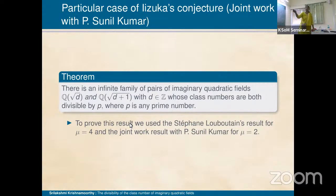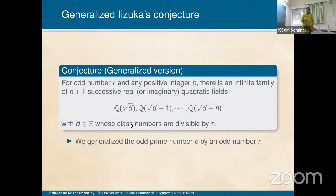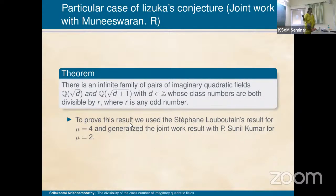This is my joint work with my student Sunil Kumar. We produced two consecutive fields and proved that P divides the class numbers of both Q(√D) and Q(√(D+1)). We mainly used the Louboutin result and then the class number divisibility. The generalized version, joint work with my another student Munishwaran, proves that for any fixed odd number R, the class numbers of consecutive fields are divisible by R.